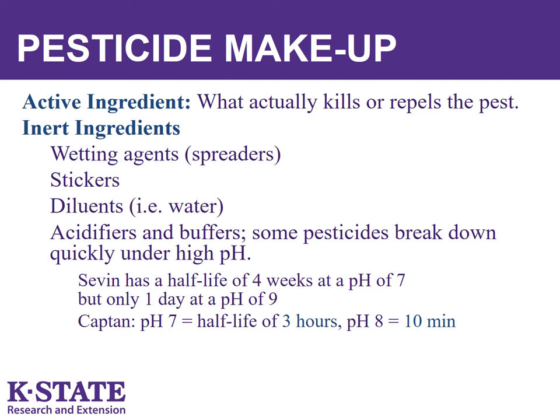Some pesticides break down quickly under certain alkaline pH conditions. For example, one product has a half-life of 4 weeks at a pH of 7, but only 1 day at a pH of 9. Captan has a half-life of 3 hours at a pH of 7, but only 10 minutes at a pH of 8. A half-life is the amount of time it takes for one half of the active ingredient to break down and become ineffective.